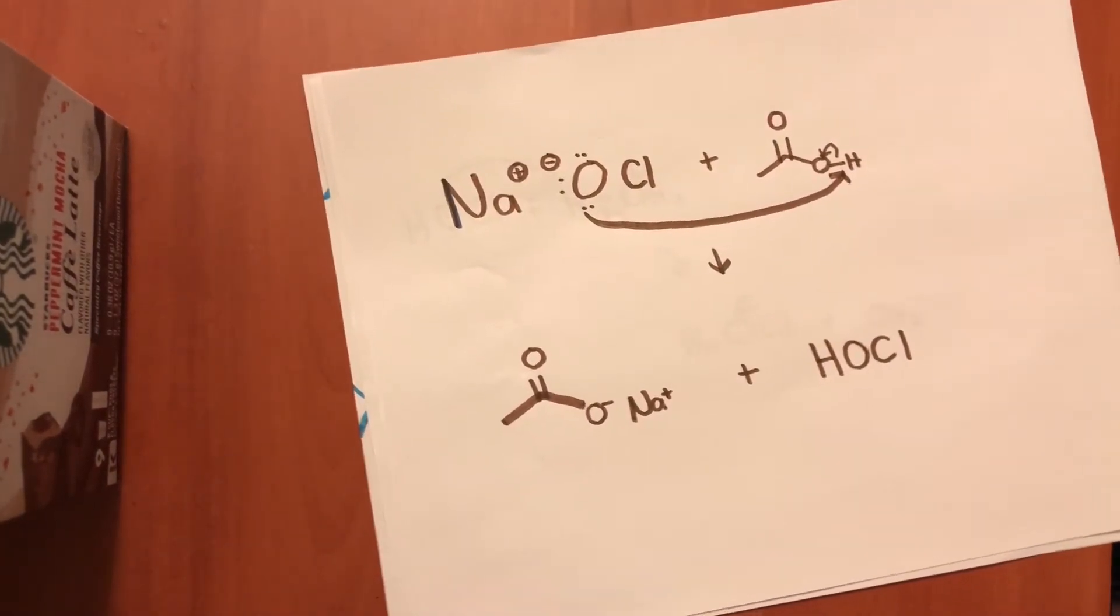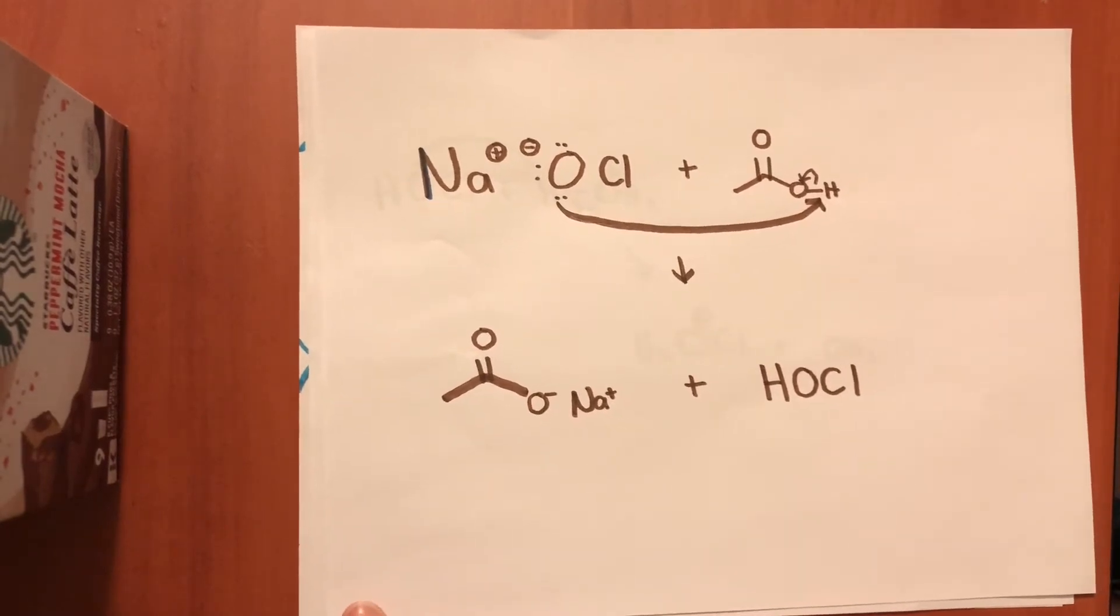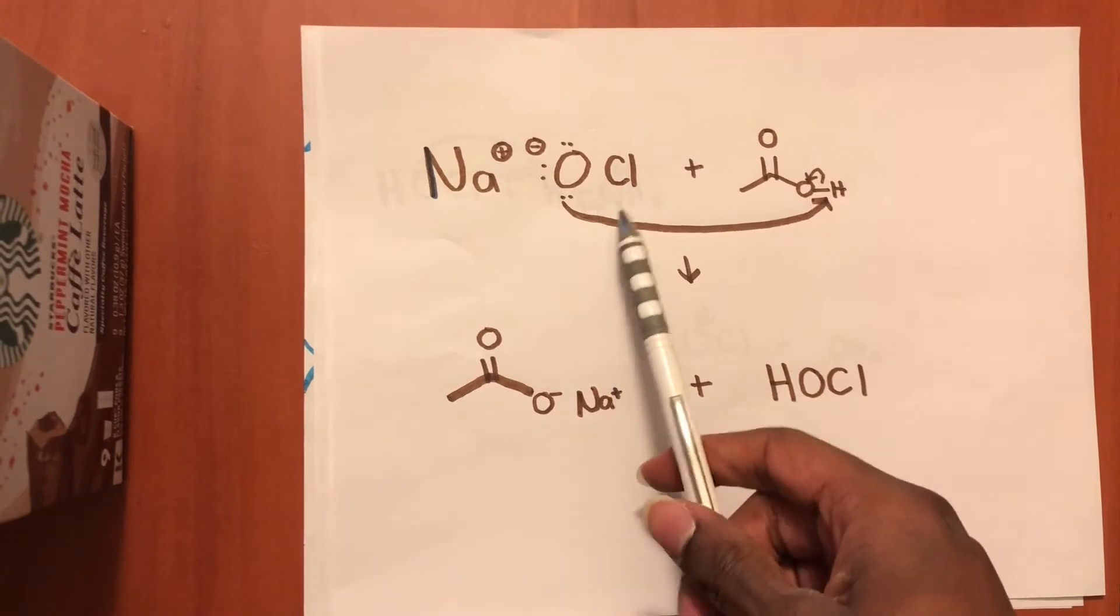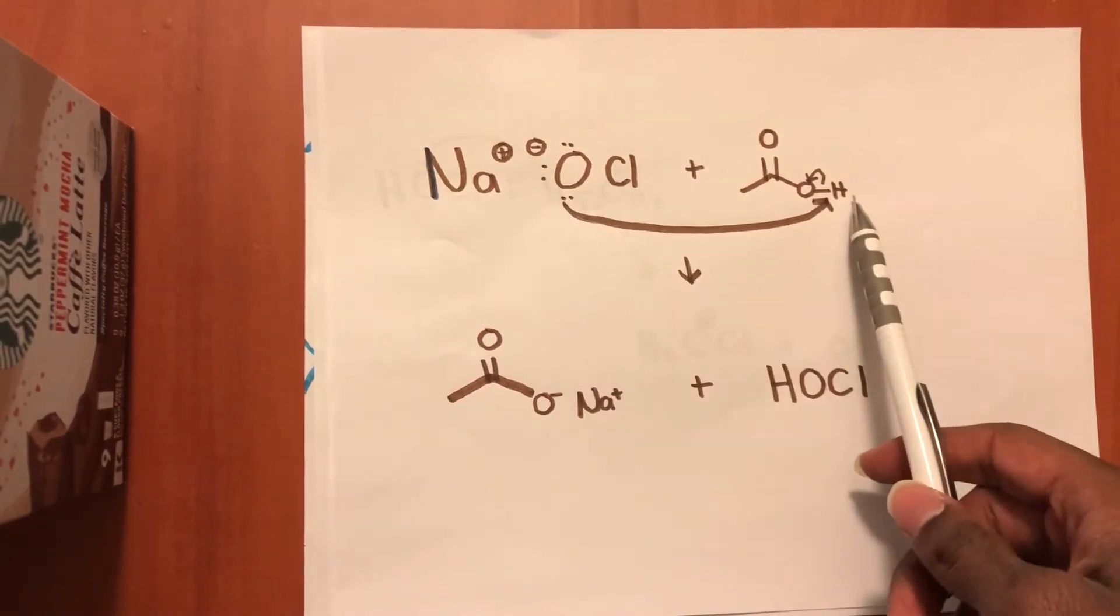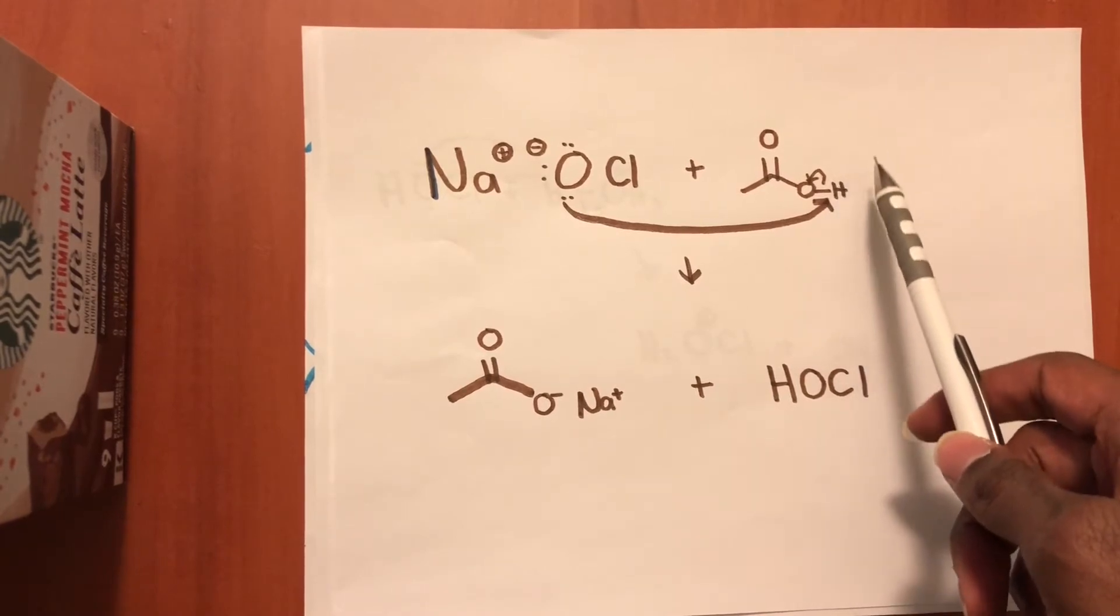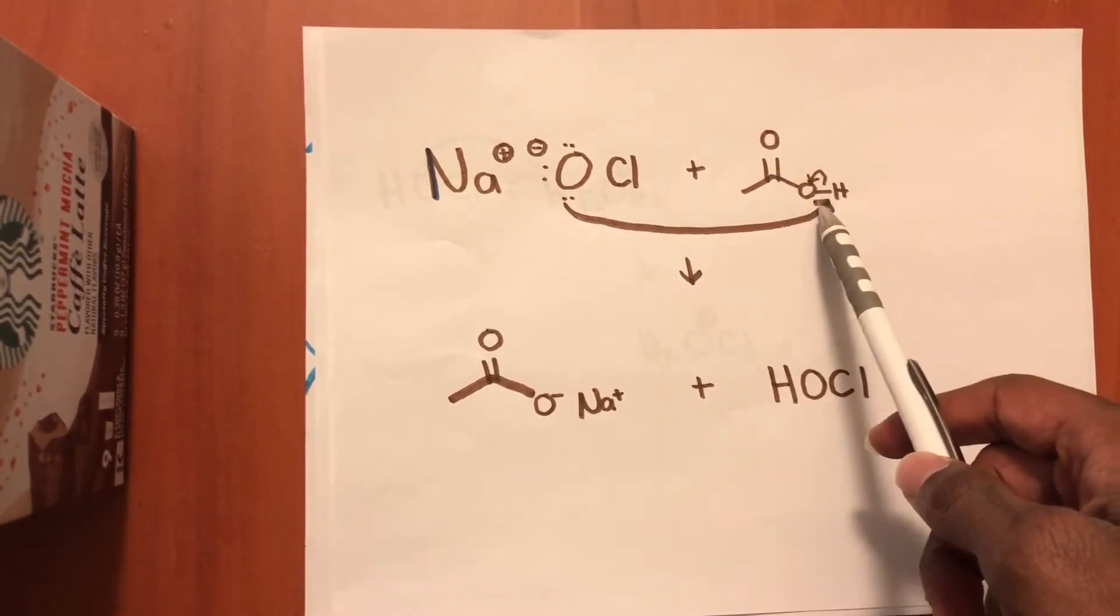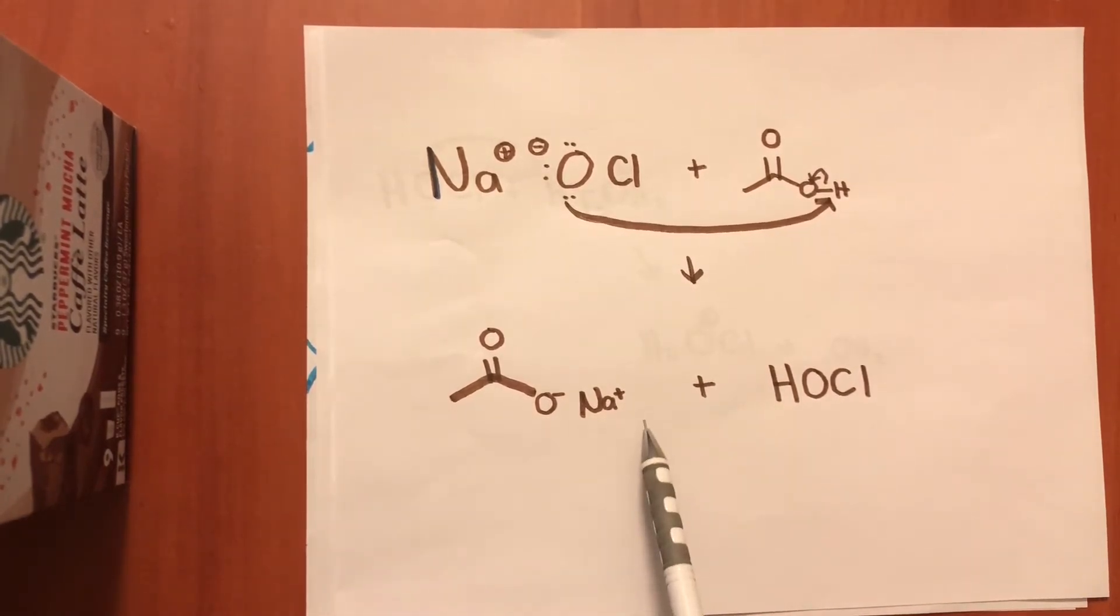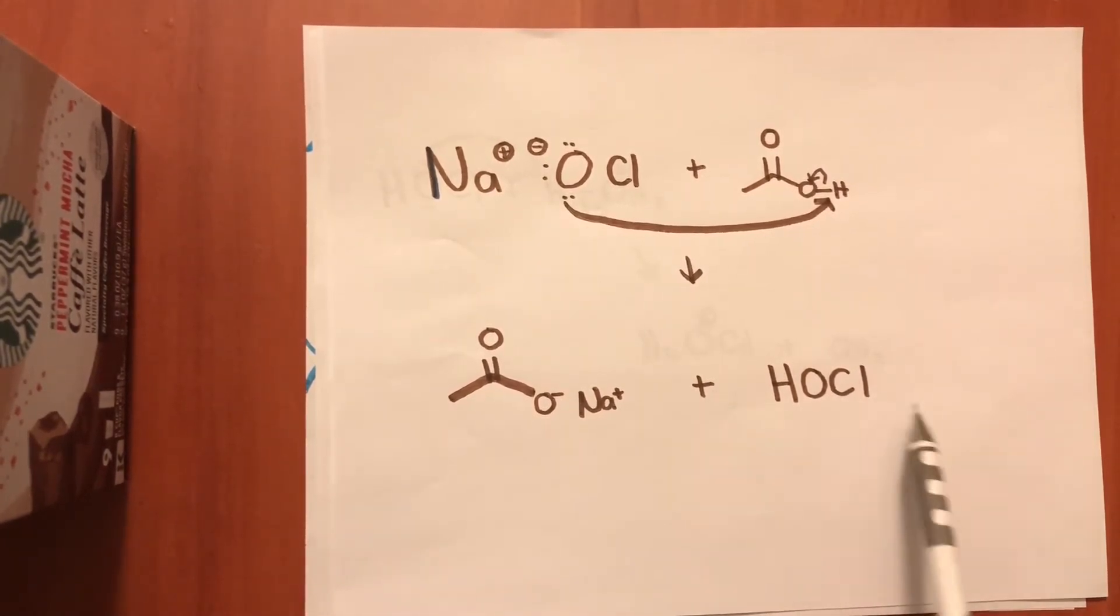First we have to make hypochlorous acid from the sodium hypochlorite found in common household bleach. Here we have the oxygen on the hypochlorite attacking the hydrogen on this glacial acetic acid. The electrons in this bond now retract back onto that oxygen. This forms an acetate ion surrounded by the spectator ion sodium and our hypochlorous acid.